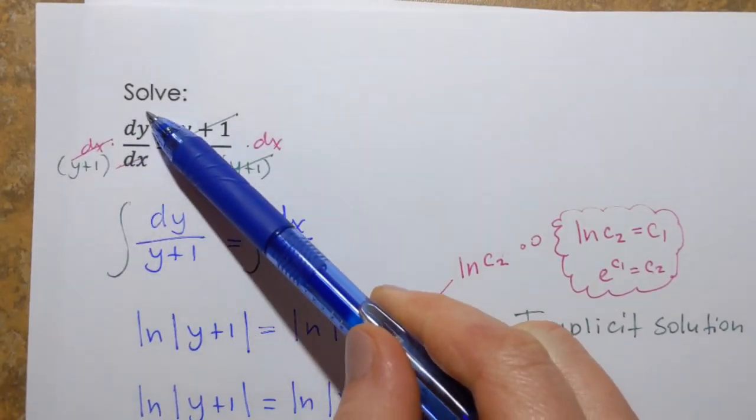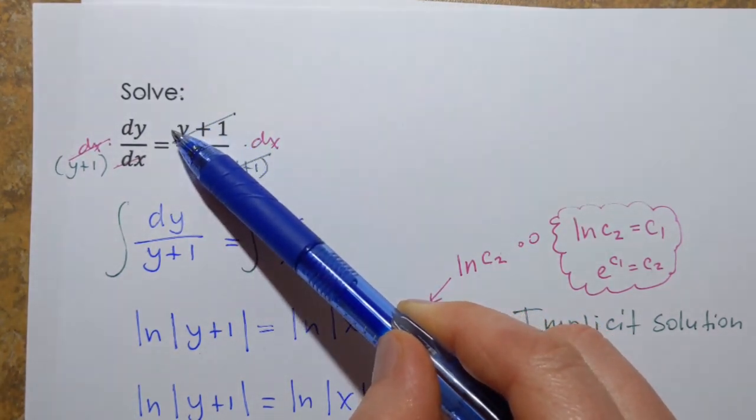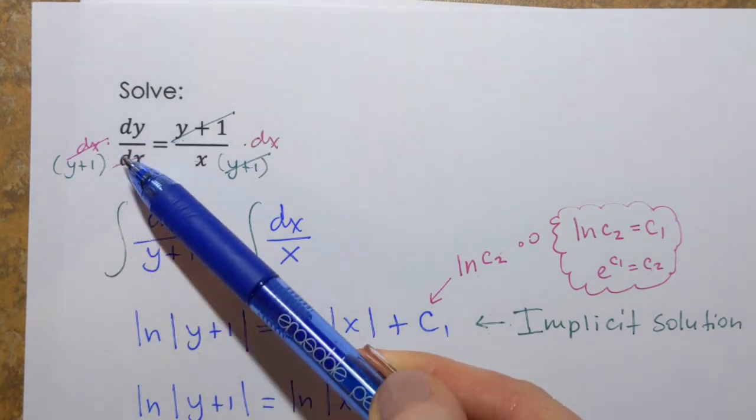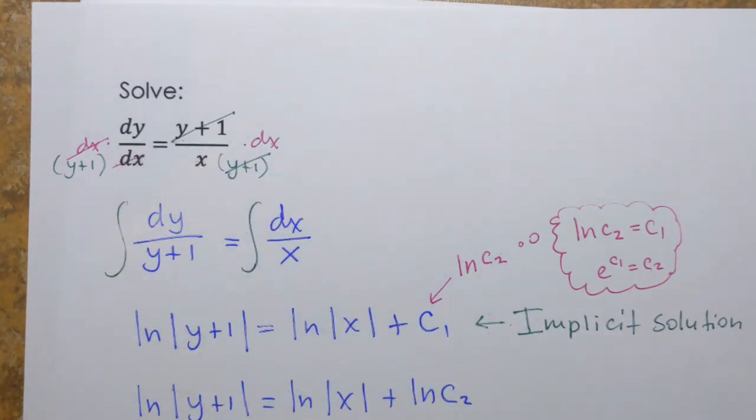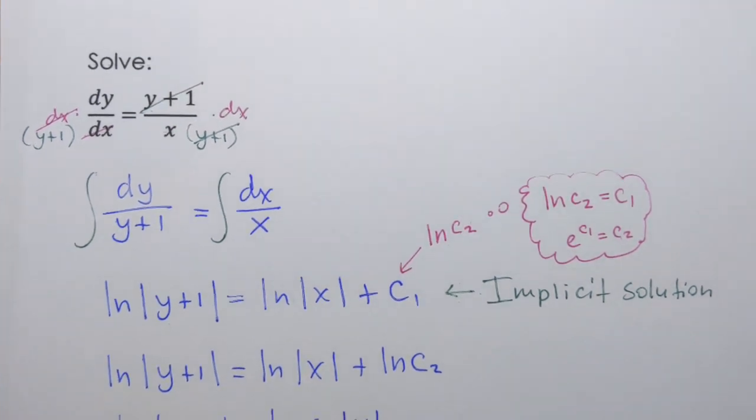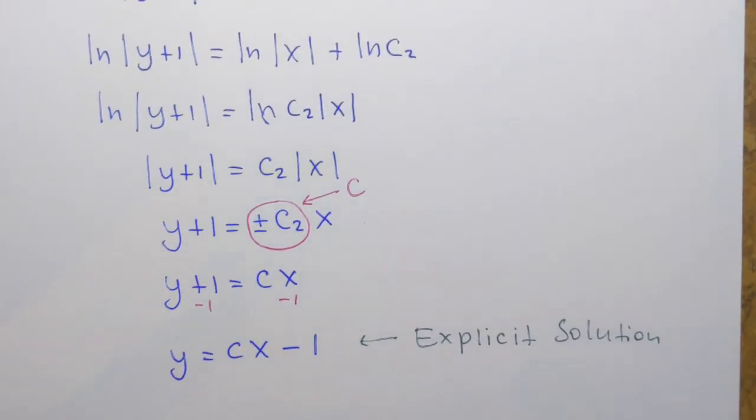So if I plug in derivative here, and if I plug in the function itself here instead of y, and I simplify everything, I'll see that the left-hand side equals to the right-hand side. So that will satisfy the equation. And that's the way to check that we found the right solution. So that part is done the same way as for any other kind of equation.